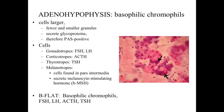You can remember the basophilic chromophils with the mnemonic B-FLAT — B for basophilic chromophils, F for FSH, L for LH, A for ACTH, and T for TSH.